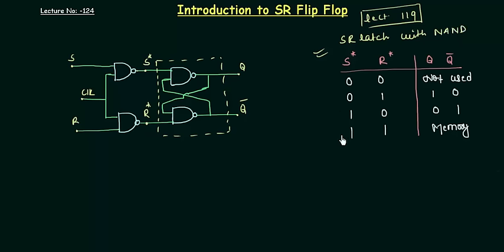If you are thinking about how the outputs Q and Q complement are being calculated, then you must watch lecture number 119. We followed the rules and instructions already studied to deduce the values for Q and Q complement depending upon those rules. I will give the link in the description. First study that presentation, then move to the introduction to the SR flip-flop.